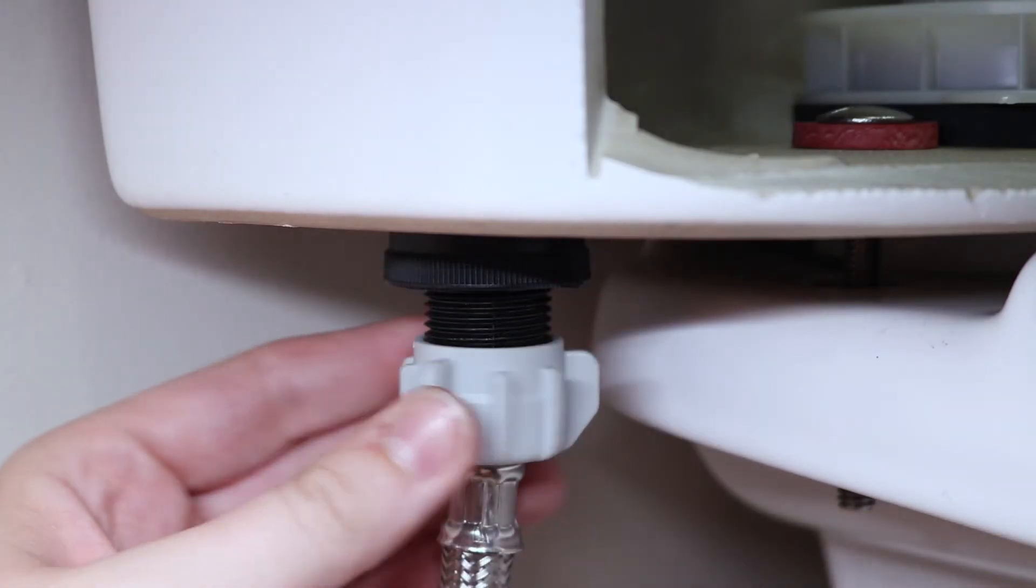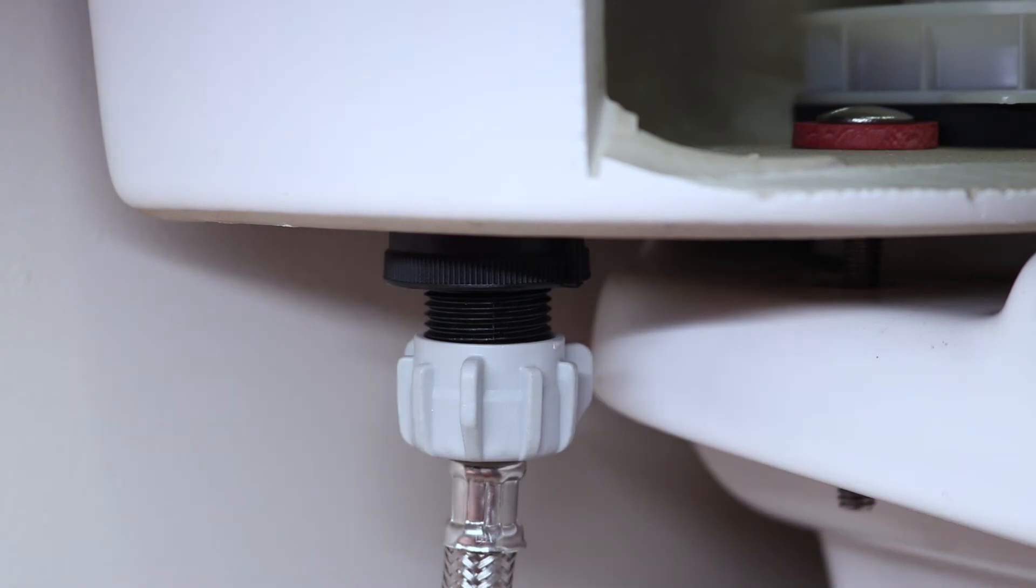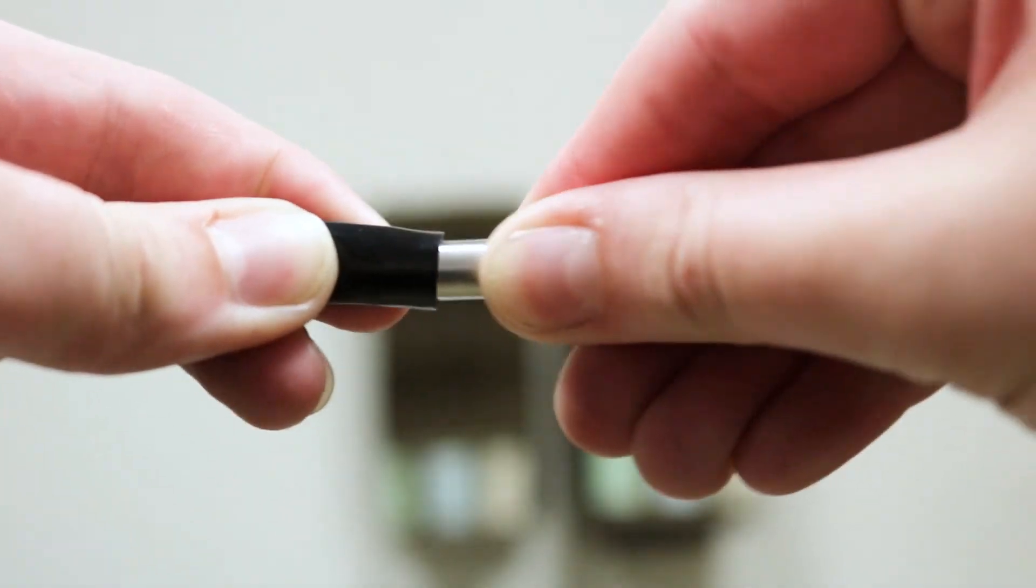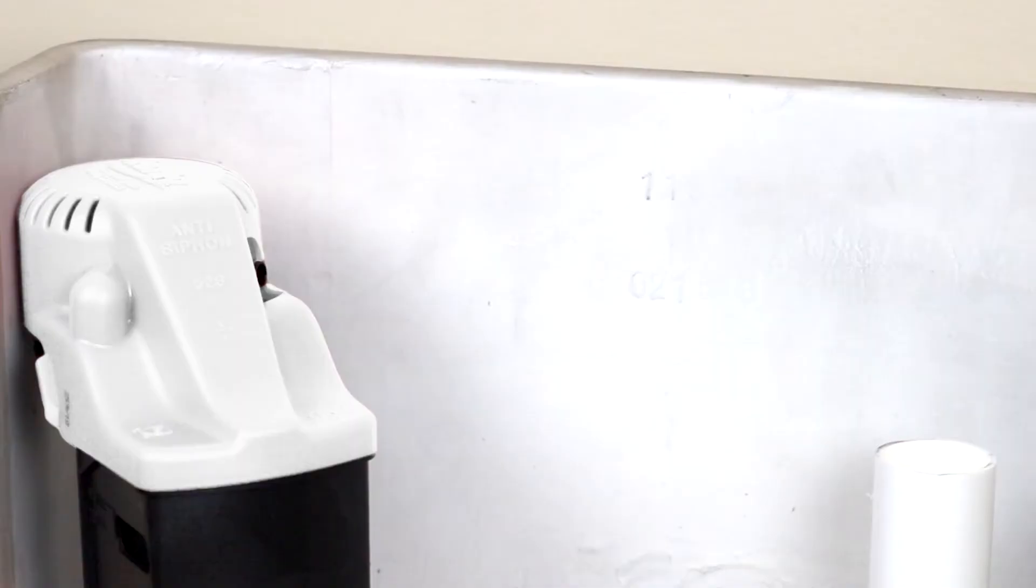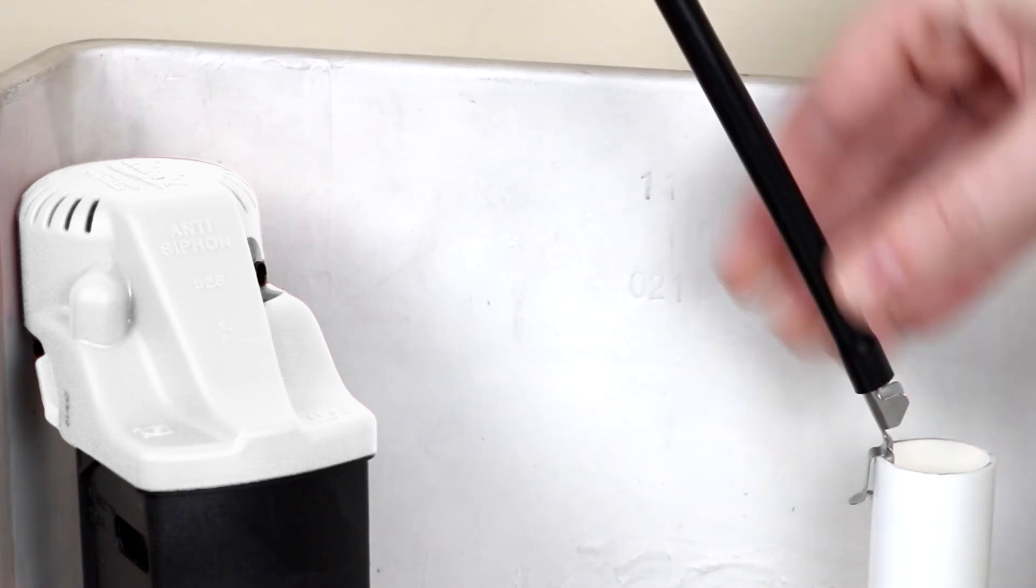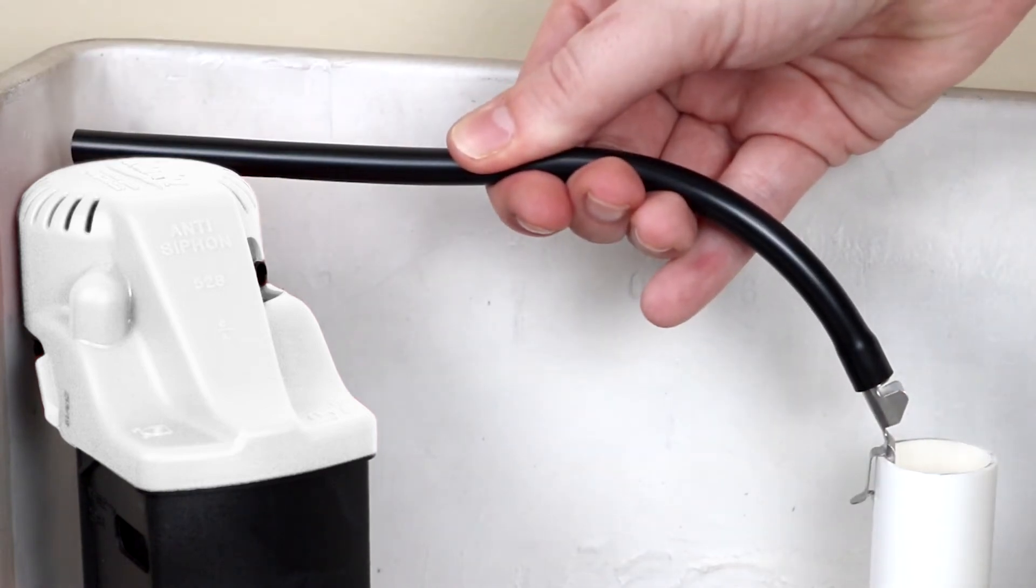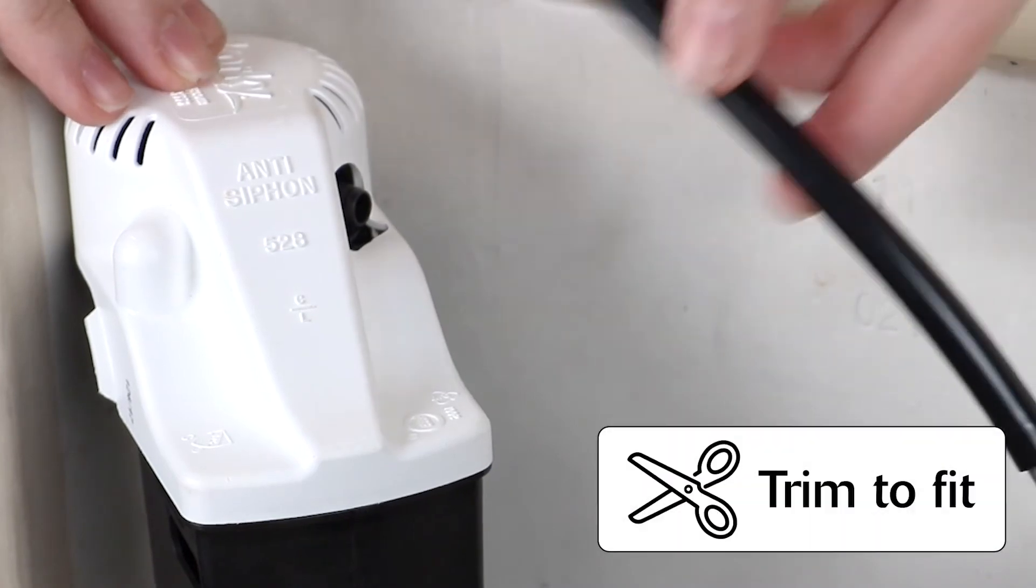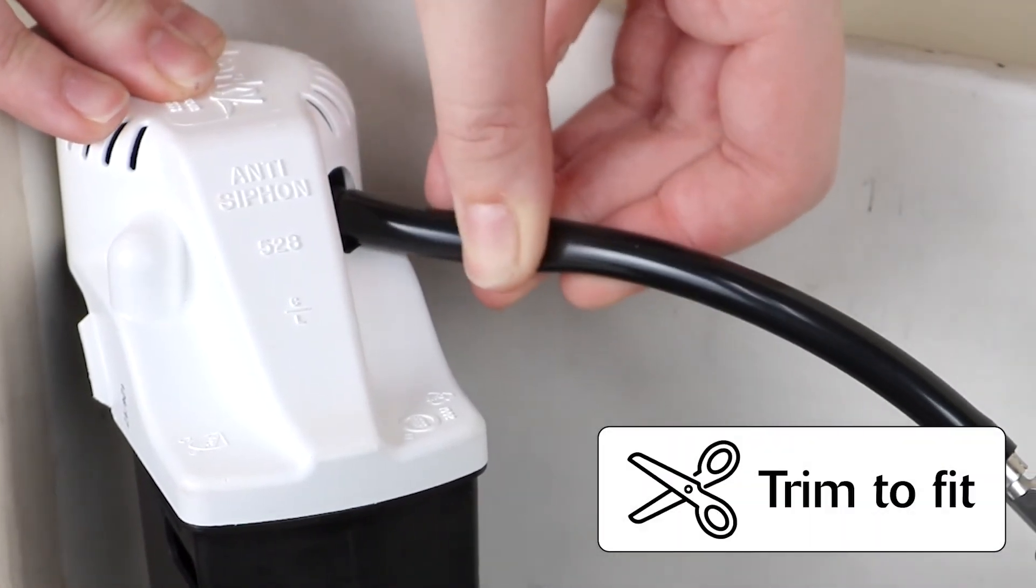Screw on the mounting nut and reattach the water supply line. Insert the metal clip into the refill tube and attach the clip to the flush valve. Make sure the refill tube has a direct path to the fill valve. Trim the tube if needed and then attach to the fill valve.